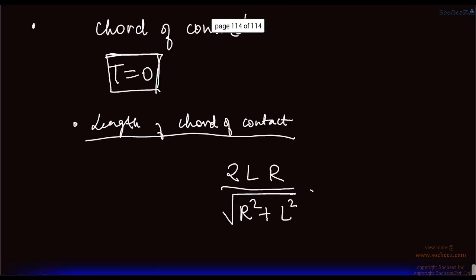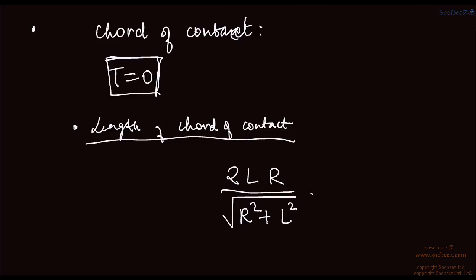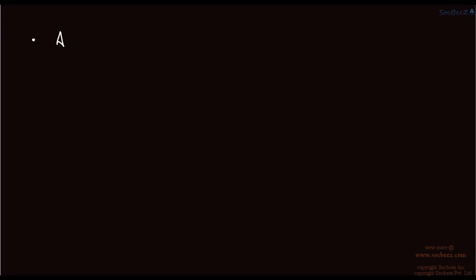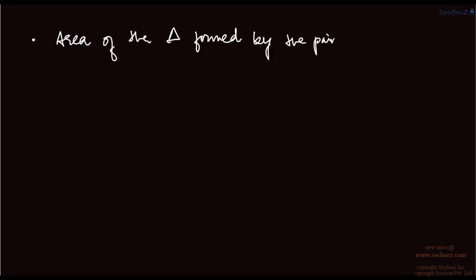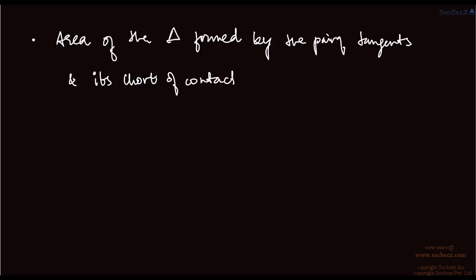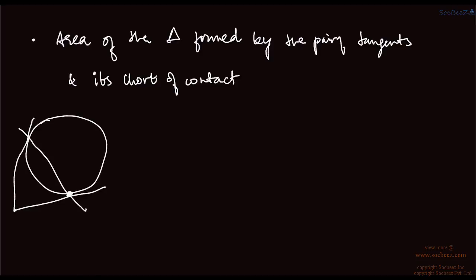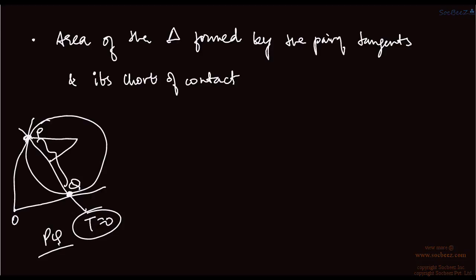The area of the triangle formed by the pair of tangents and the chord of contact: if we have a point from which two tangents are drawn touching the circle at P and Q, then PQ is the chord of contact with equation T equals 0. The length of this chord of contact is 2LR where R is the radius of the circle and L is the perpendicular distance. The area of the triangle formed by the tangents is R·L·Q divided by R squared plus L squared.